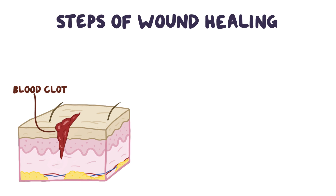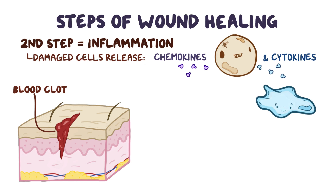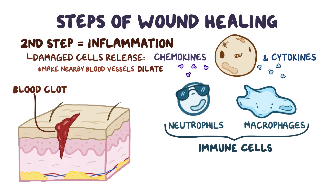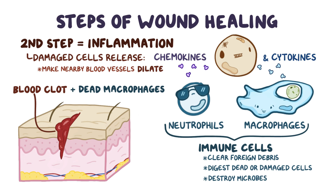Once an adequate blood clot has formed, the second step of wound healing begins, and that's inflammation. Damaged cells release tiny proteins called chemokines and cytokines, which recruit immune cells like macrophages and neutrophils to the area, and make nearby blood vessels dilate and become more leaky and permeable. Immune cells start to seep into the affected area, and they begin to clear foreign debris like dirt and digest dead or damaged cells caused by the injury, as well as destroying any microbe that may have gotten in. At the end, there's a blood clot and dead macrophages that have consumed damaged cells and other debris, and this forms a scab, our body's own bandage.